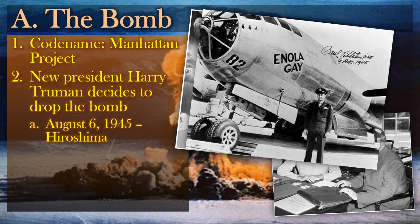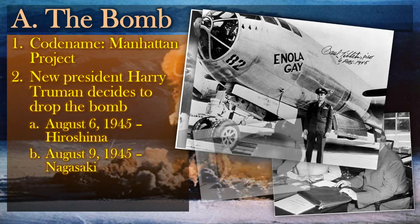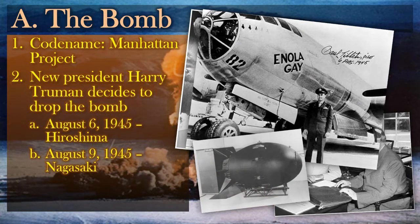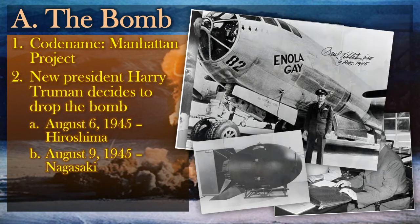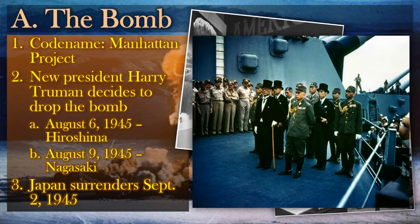The bomb eventually had a dramatic effect, but Japan did not respond. Three days later, on August 9th, the only other bomb the United States had — a plutonium bomb — was dropped on the city of Nagasaki. It would take about a month, and intervention from the Japanese emperor, before Japan decided to surrender.